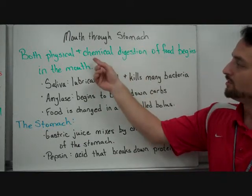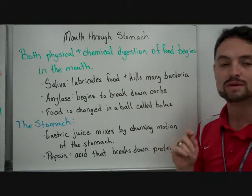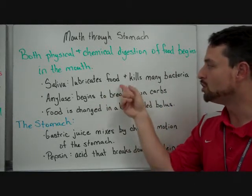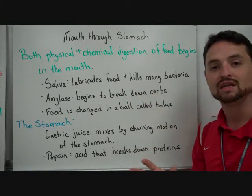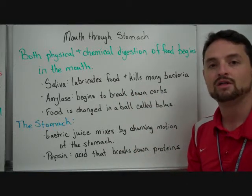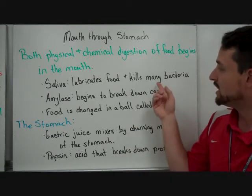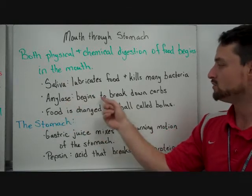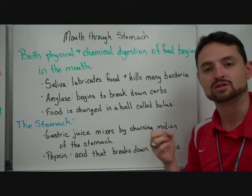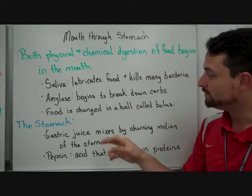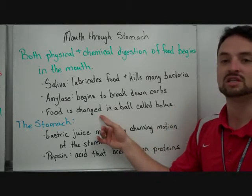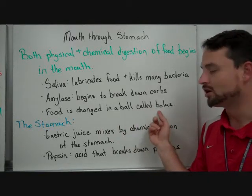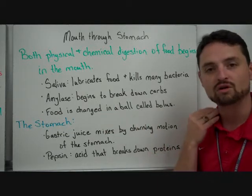Let's break this process down. Mouth to stomach: both physical and chemical digestion of food begin in the mouth. As you chew food, your saliva will lubricate it and also kill many of the bacteria that might be present — it's a good safety mechanism. Saliva amylase will begin to break down carbohydrates, especially complex carbs. Food is also changed through chewing; we no longer call it food at this point — it's changed into a ball called a bolus. Then you swallow it and it passes down through the esophagus into the stomach.